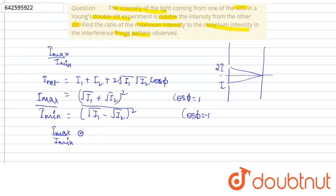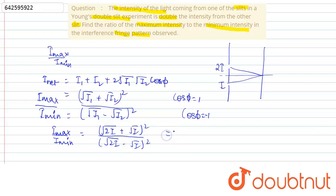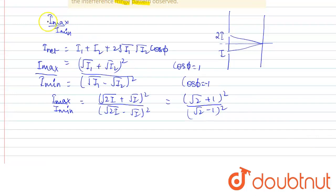Putting I1 = 2I and I2 = I, we get I_max/I_min = (√(2I) + √I)² / (√(2I) − √I)². Taking √I common from both sides and cancelling, we are left with (√2 + 1)² / (√2 − 1)².